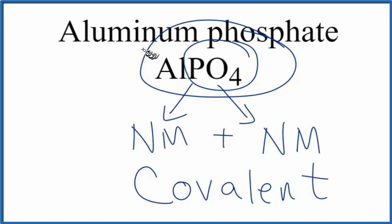This is Dr. B discussing whether aluminum phosphate, AlPO4, is ionic or covalent. Thanks for watching.